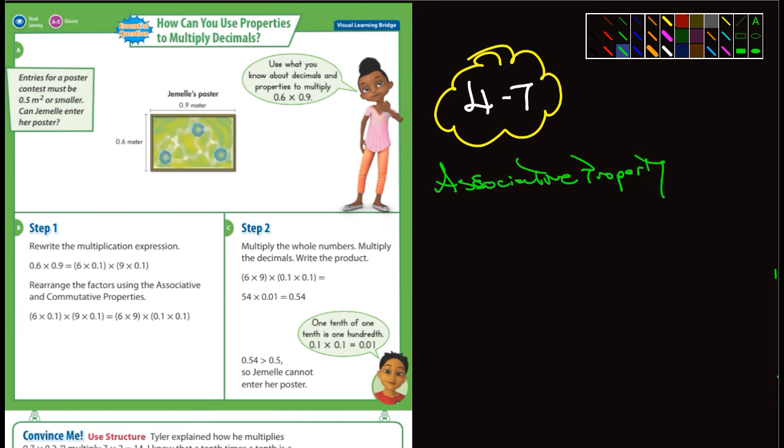That states that you can change the grouping of the addends. So, for example, 2.3 plus 5.6 plus 0.05 is the same as 0.05 plus 5.6 plus 2.3.